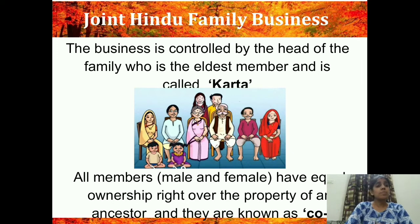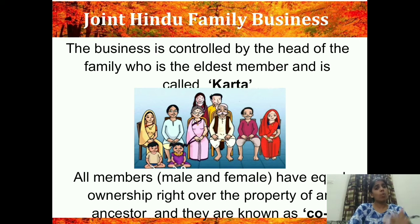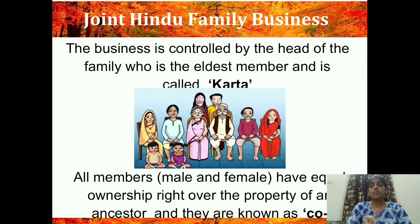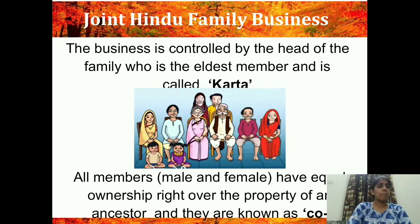All the members — male and female — have equal ownership right over the property of the ancestors and they are known as co-parceners. Earlier only male members had ownership rights, but with the change in the law, now all members, be it male or female, have the ownership right the moment they are born into the family. The business is controlled by the head of the family and all other members are co-parceners.